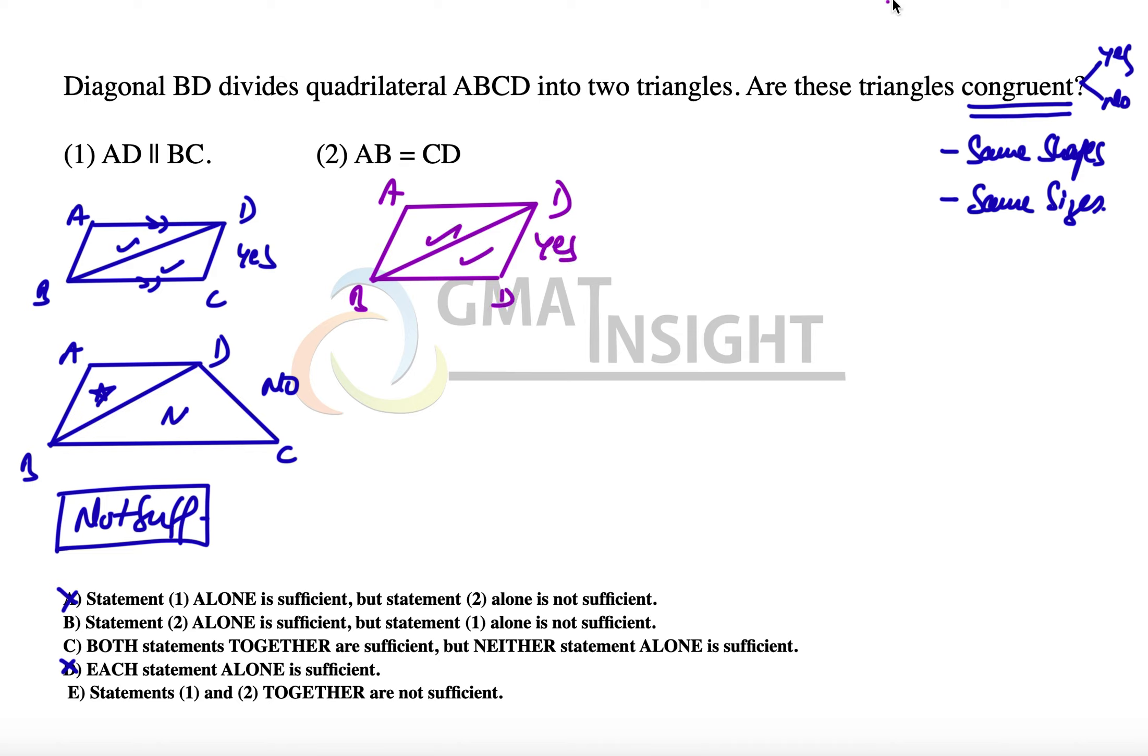The second figure: because AB is equal to CD, let us draw a trapezium which is isosceles trapezium in which the two legs which are non-parallel sides are equal. So this is ABCD in which I have drawn that this side is equal to this side. And if we draw the line BD, then it does not divide this quadrilateral into two equal parts, so answer to the question is no. So the second statement alone as well is not sufficient to answer the question.